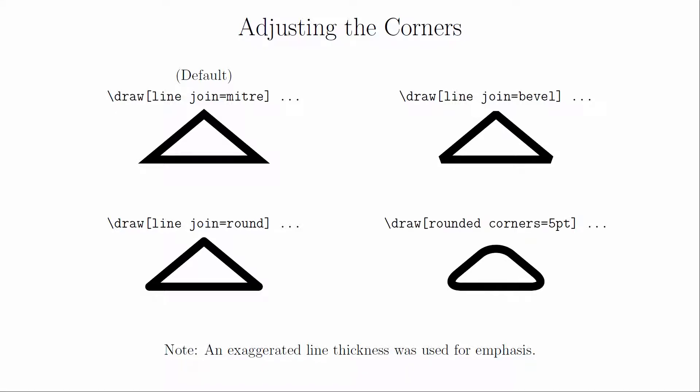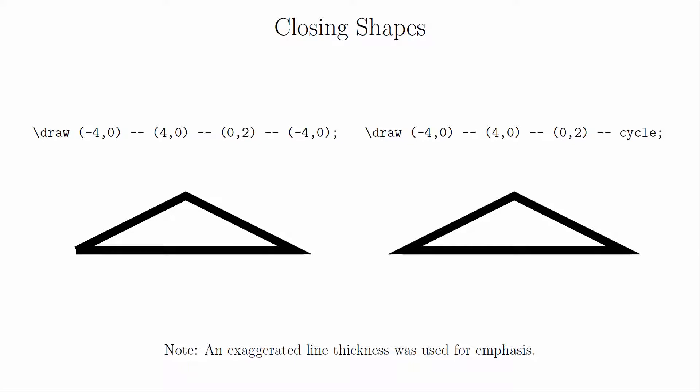If you wanted an even rounder shape, you can use the rounded corners option. By picking different radii, you can make the corners more or less rounded. This is also where it pays to use cycle instead of making the last point the same as the first point. This will ensure that the last corner is drawn appropriately.